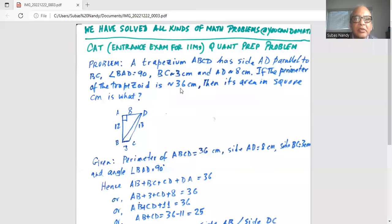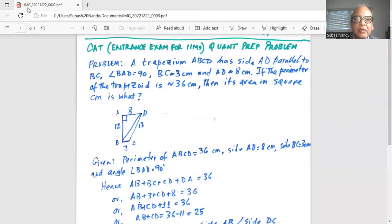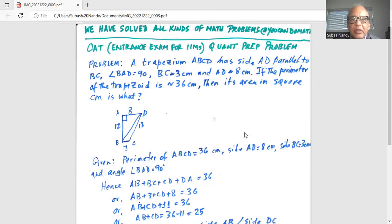Without further hesitation, I'll get started. Trapezium ABCD has side AD parallel to BC. Angle BAD is equal to 90 degrees. BC equals 3 centimeters and AD equals 8 centimeters. If the perimeter of the trapezoid is 36 centimeters, then its area in square centimeters is what?